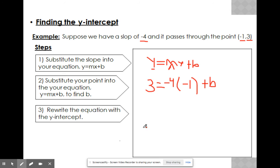And so now all we do from here is we just solve for b. So negative 4 times negative 1 is going to give us a positive 4 plus b. We still don't know what that y-intercept is.